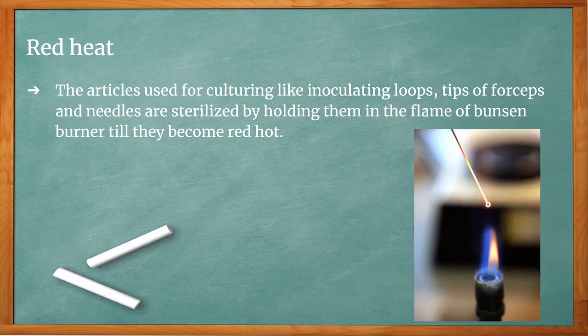Red heat: articles used for culturing, such as inoculating loops, tips of forceps, and needles, are sterilized by holding them in the Bunsen burner until they become red hot.